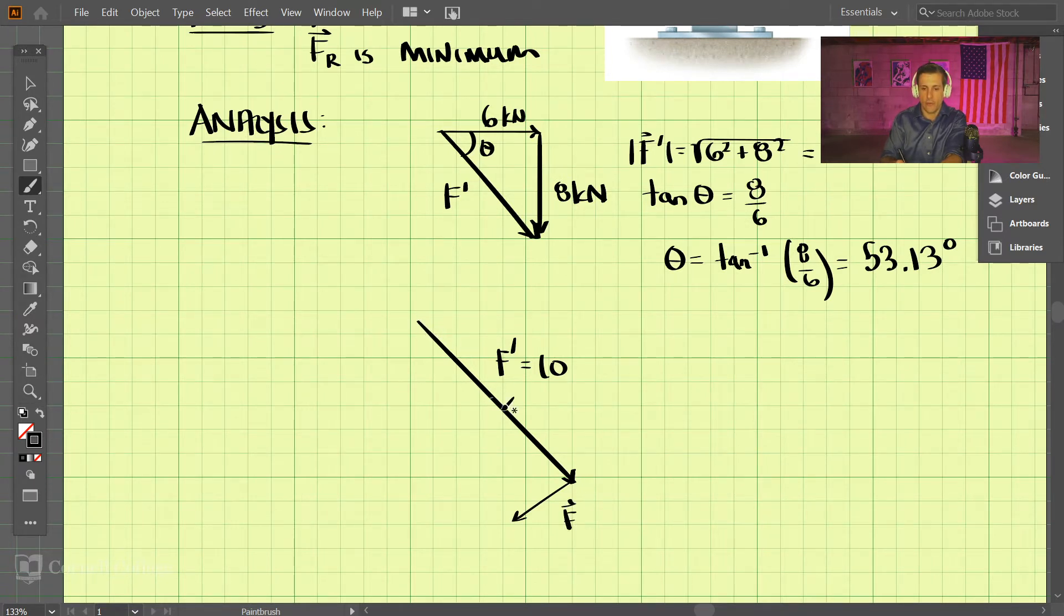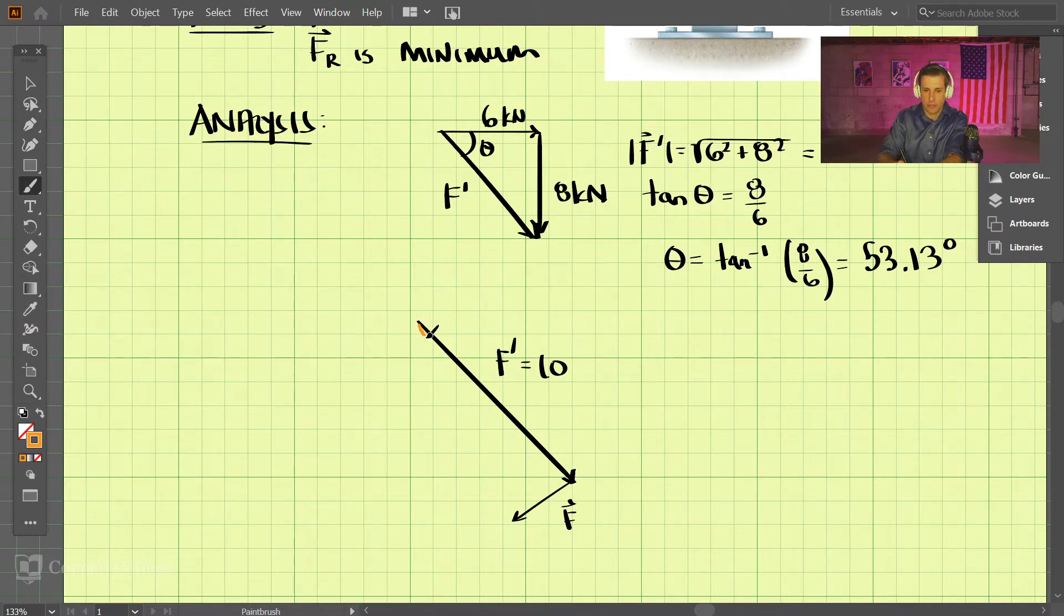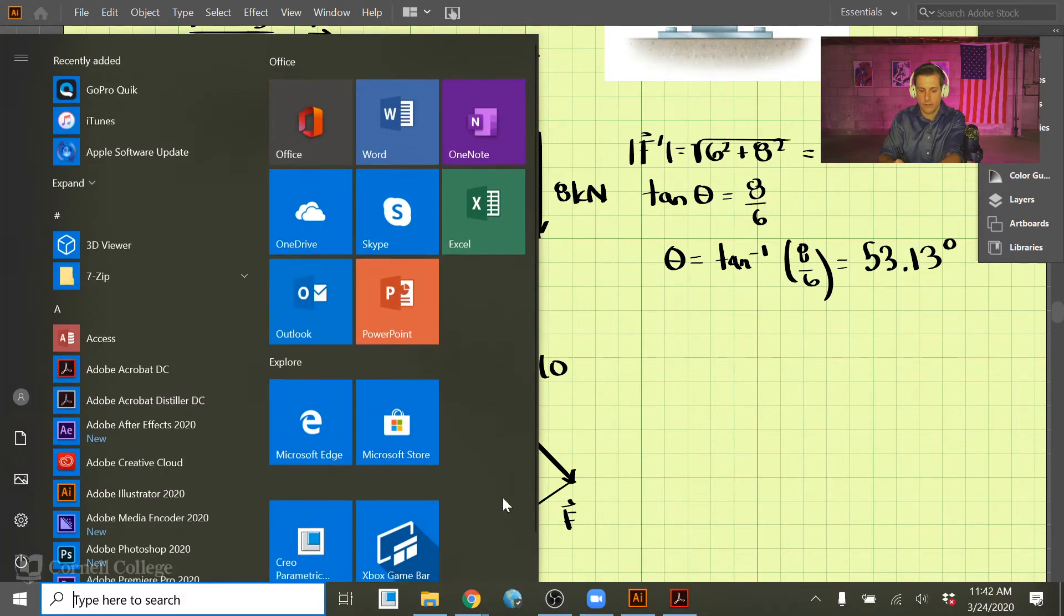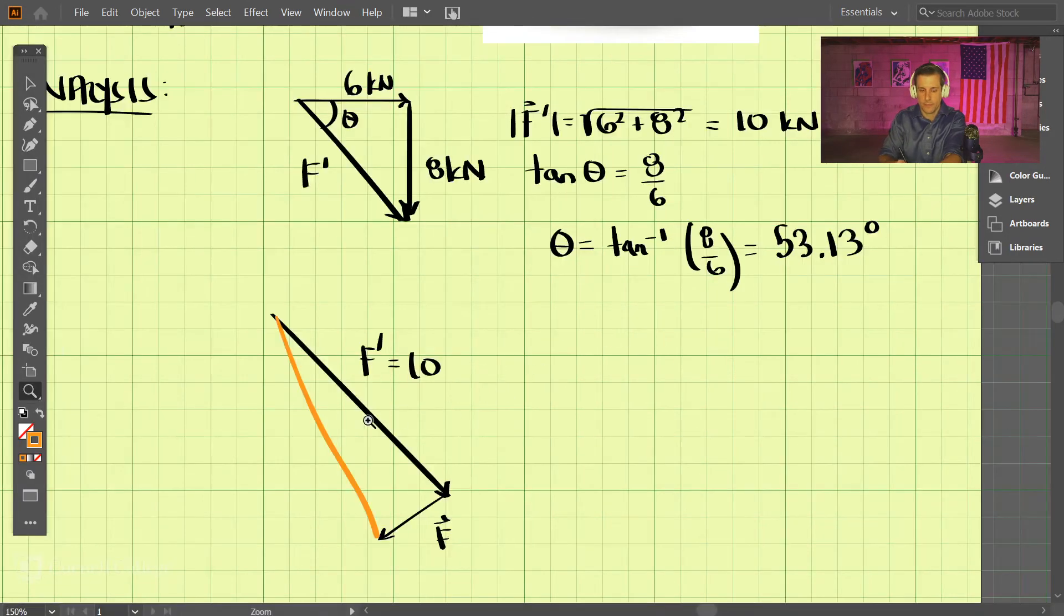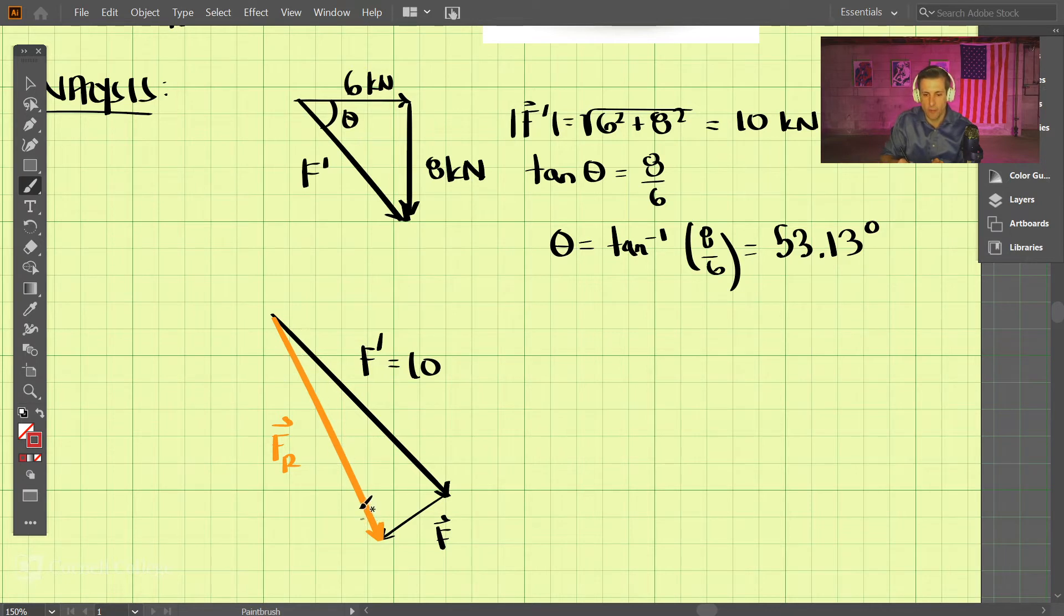And we're going to add F to it, and F may look something like this. If we add those two together, that should be the resultant, the total resultant of the system. That's the resultant vector FR. The goal of this problem is to make FR as small as possible.